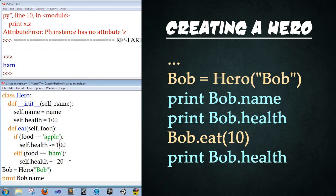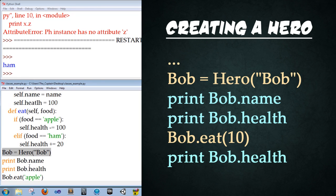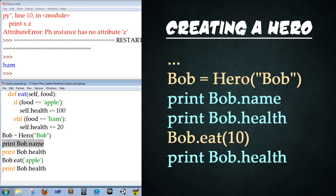So to review, we've declared a class definition. We've declared an instance right here with bob is equal to the hero. We've printed the name, we've printed the health, he eats an apple and then we print his health again. Let's go ahead and save. F5 to run it.